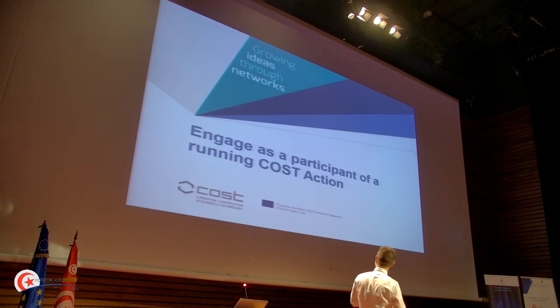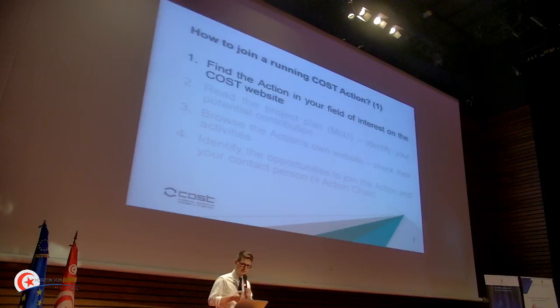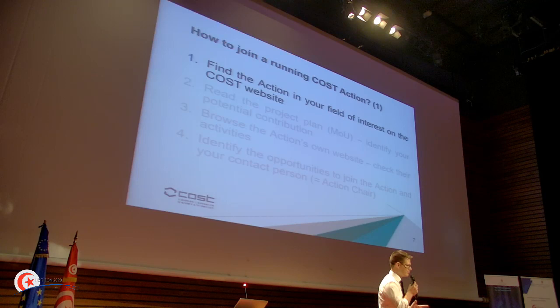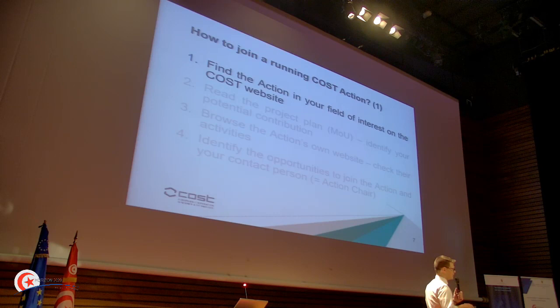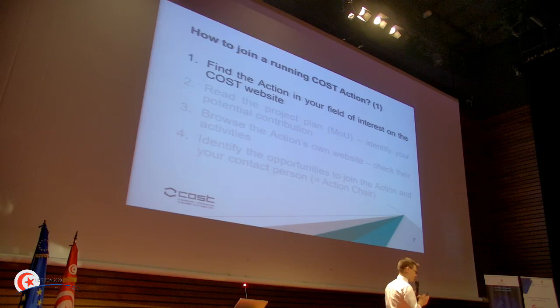To engage as a participant in a running Cost action, there are several steps to follow. The first one is: find the action in your field of interest on the Cost website. Not only the Cost website is useful — on the Tunisian research page you will also find a list of all Cost actions currently running. For the moment, we have around 230 Cost actions running, and the majority is still joinable because they're in the first three years. With actions in the last year, you cannot join, but you will see this in the information on the specific Cost action web page.